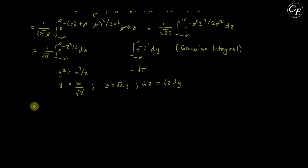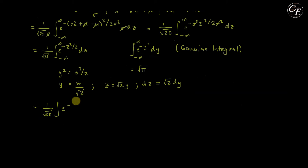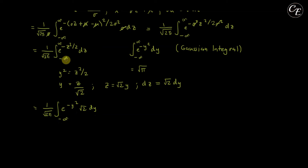Our integral becomes 1 over square root of 2 pi, times the integral of e raised to negative y squared, times square root of 2 dy. If z is negative infinity, y is negative infinity, and if z is positive infinity, y is positive infinity.